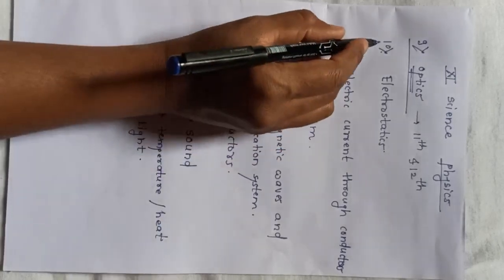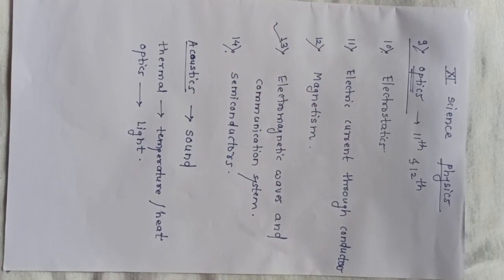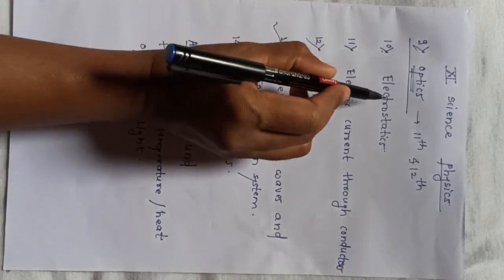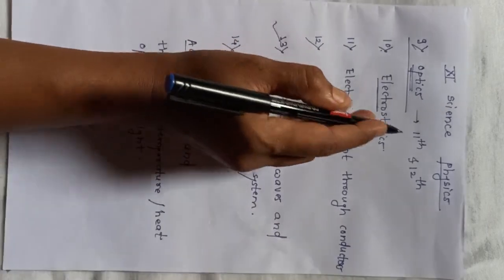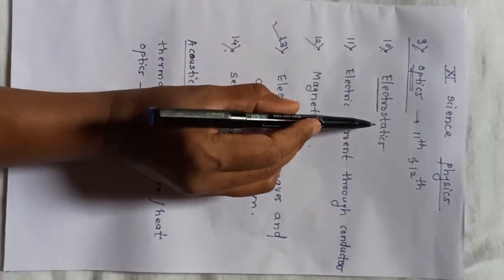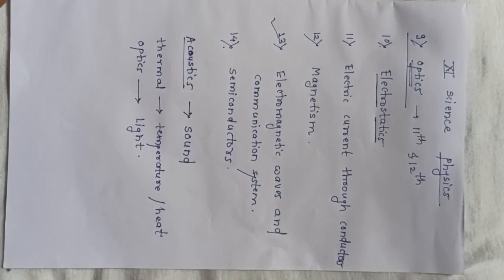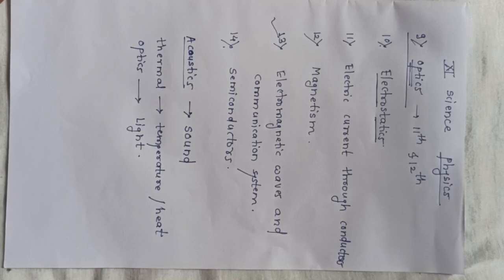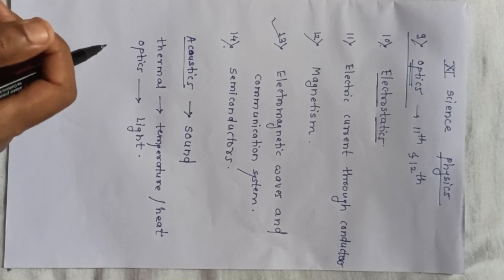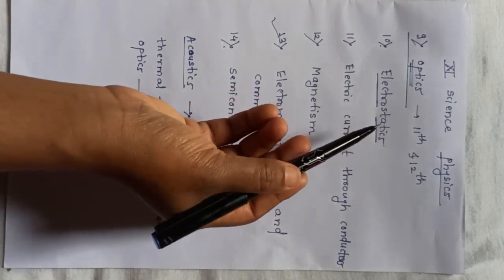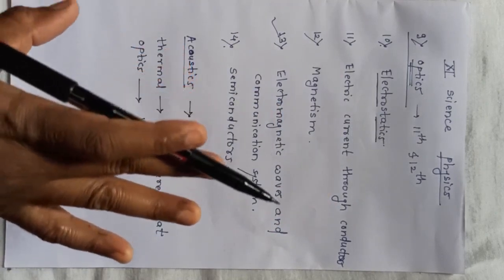The tenth topic is Electrostatics. 'Electro' means electric charges or electric field, and 'statics' means at rest. So in this chapter, we shall consider the electric charges which are at rest and the different characteristics of stationary charges. The topic is important from both theory and entrance examinations point of view.